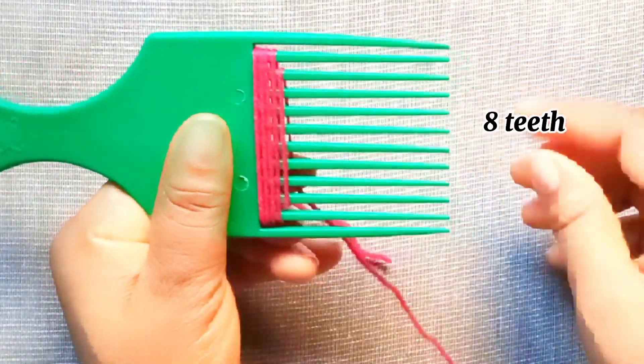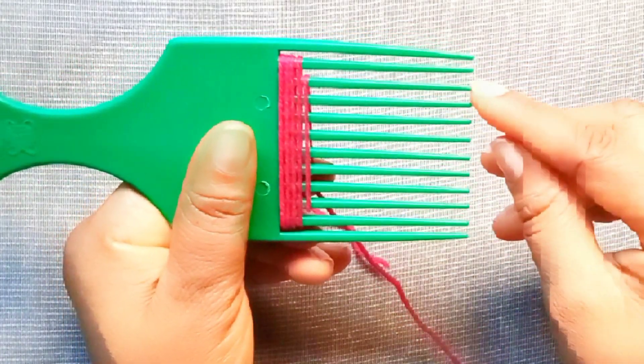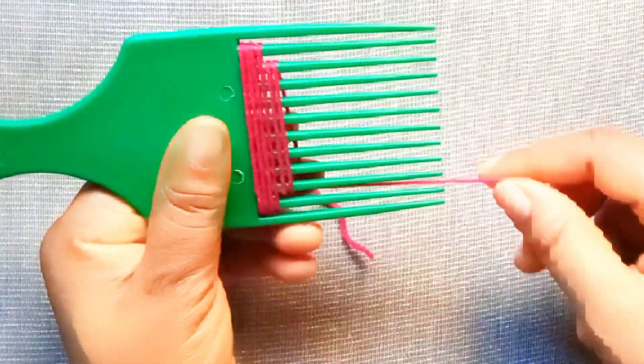As you saw, I counted out 10 teeth from the comb and wrapped wool around it 4 times.